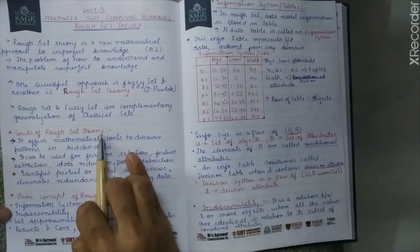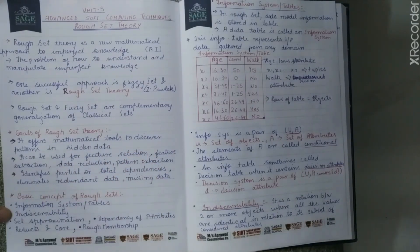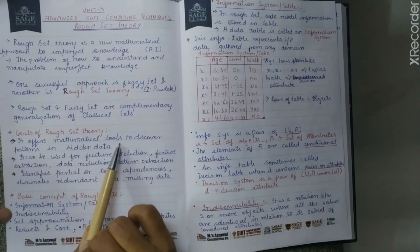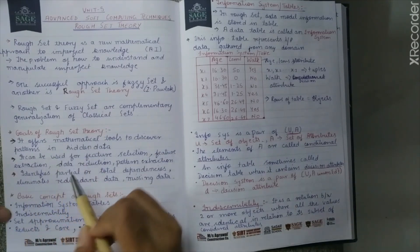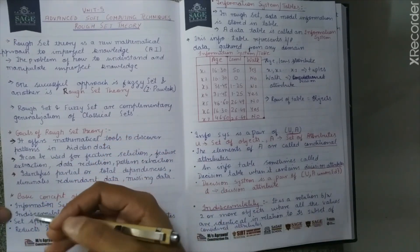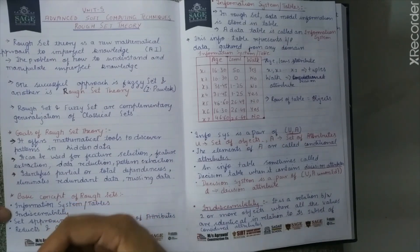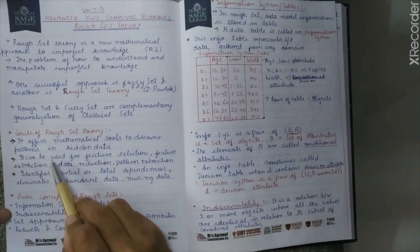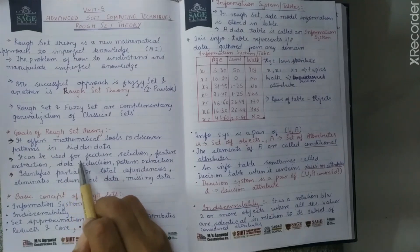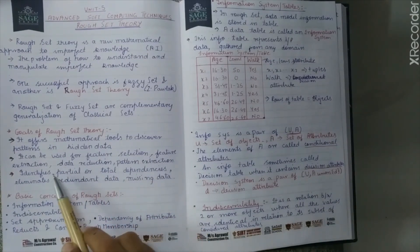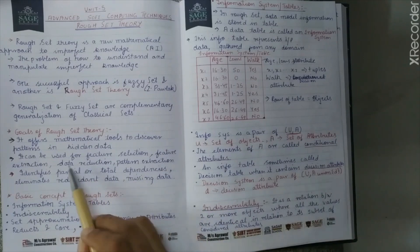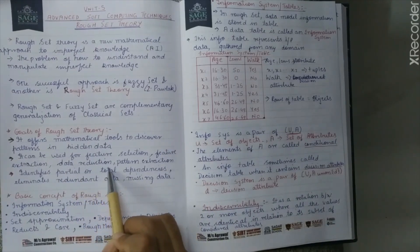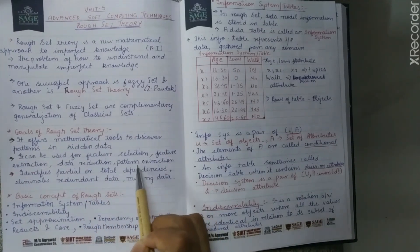The goals of rough set theory: it offers mathematical tools to discover patterns and hidden data. It can be used for feature selection and feature extraction — to reduce or extract any pattern from the data.